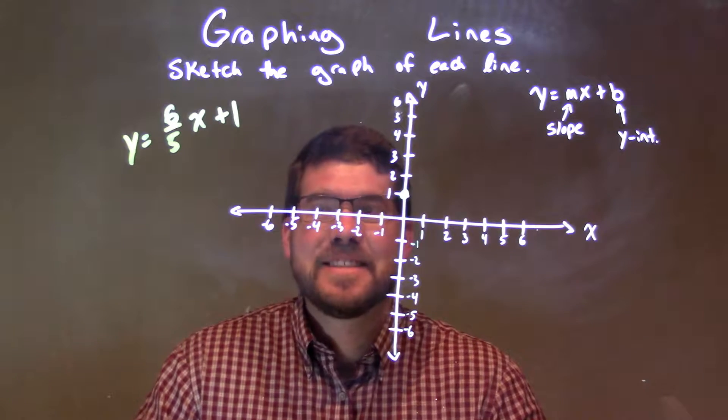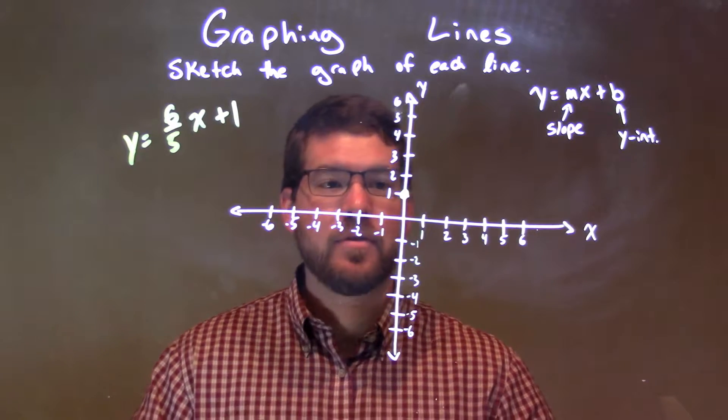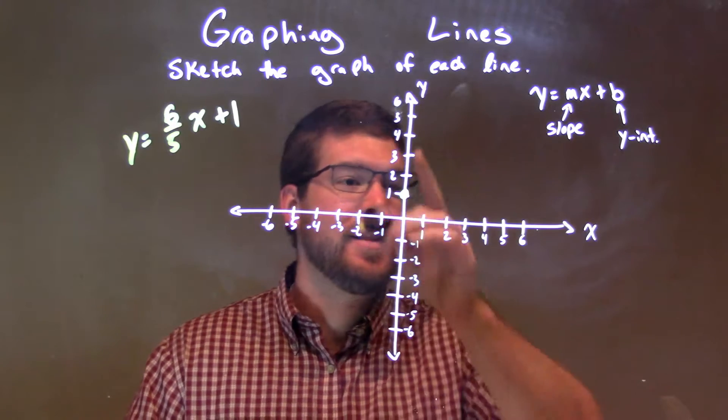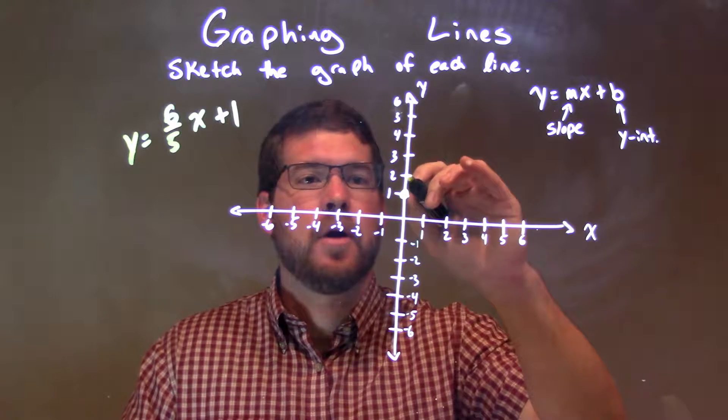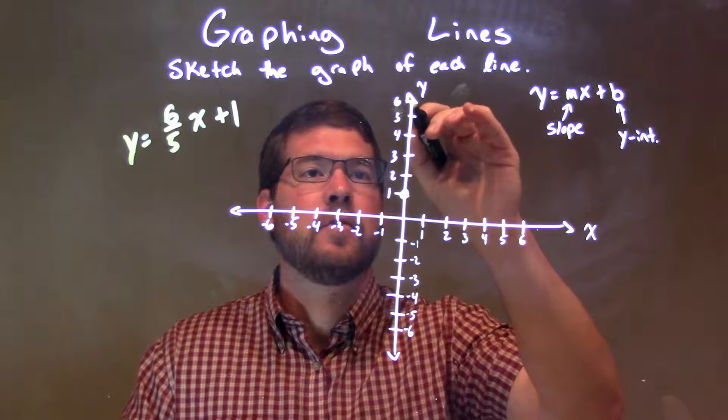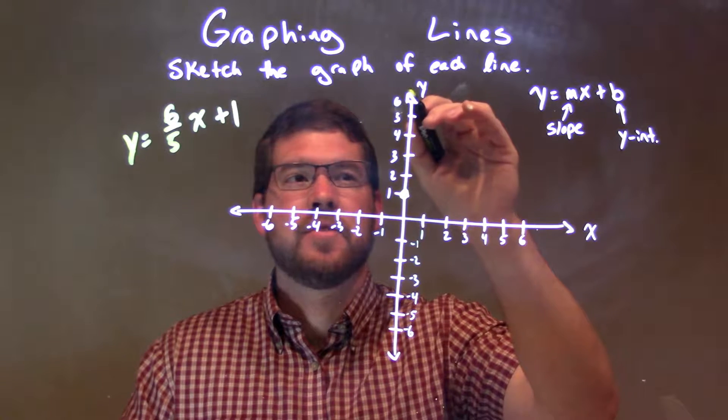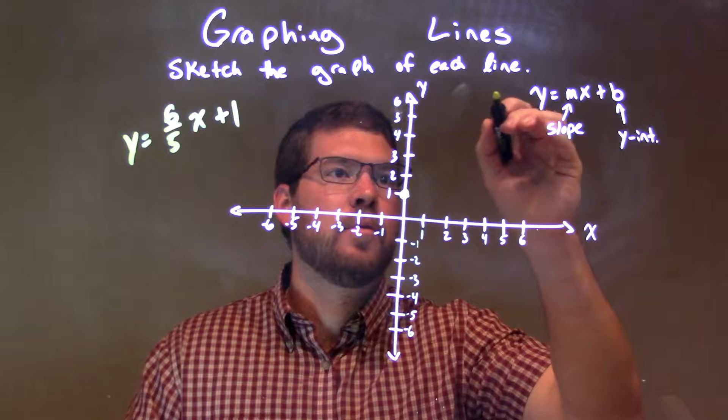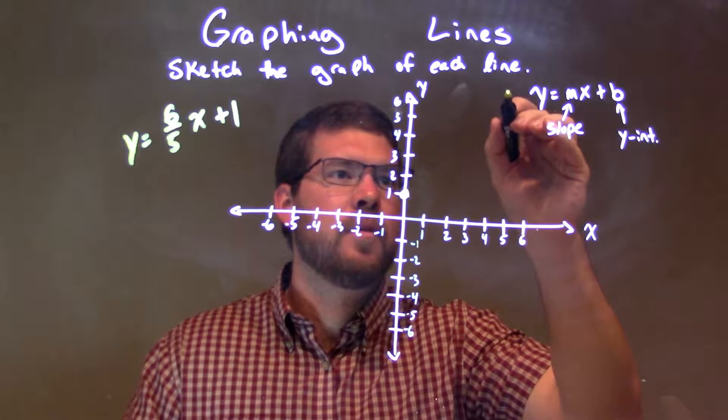Now we have 6 fifths, so we can go up 6 units over 5. That's going to get a little bit out of our graph, we'll see. So we go up 6 units, 1, 2, 3, 4, 5, 1 more, that's where 7 is, and 1, 2, 3, 4, 5. So there's a point somewhere here.